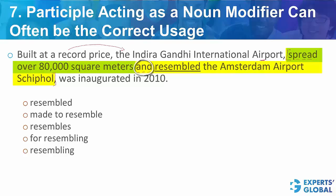Therefore, while it may sound a bit awkward to read, the correct usage here is 'resembling.' We need to read it this way: airport spread over such and such area, airport resembling the Amsterdam airport. We see 'resembling' here is a present participle, and it is acting as a noun modifier. Yes, the meaning is such that we want the present participle here to act as an adjective — a noun modifier.